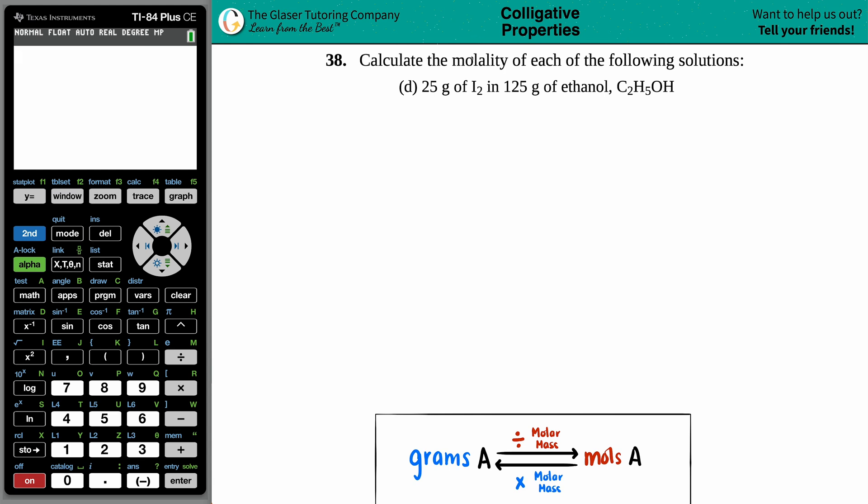Number 38, calculate the molality of each of the following solutions, and then we have letter D. So we have 25 grams of I2 in 125 grams of ethanol, C2H5OH, and in this case we have to find out the molality.